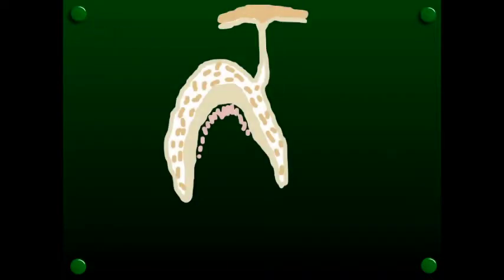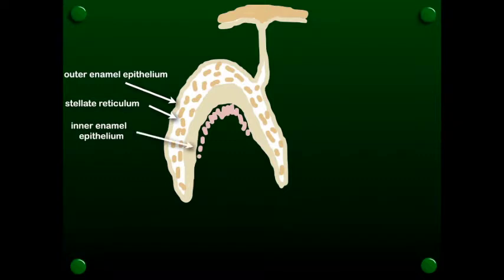That epithelium is going to differentiate so that we have an outer epithelium, which is referred to as the outer enamel epithelium. And then it has cells in the center that are stellate in appearance, so we refer to that as the stellate reticulum. And then the inner portion of that bell or cup is going to be made up of epithelium, referred to as the inner enamel epithelium.